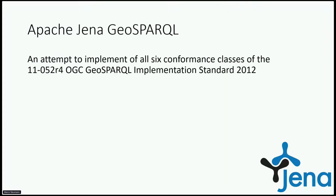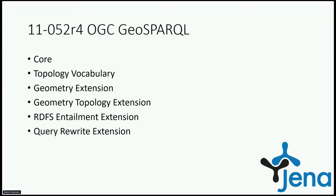Let's have a look at the Apache Jena GeoSPARQL module. As already mentioned, it is an attempt to implement all six conformance classes of the OGC GeoSPARQL implementation standard from 2012. The OGC GeoSPARQL standard establishes these six conformance classes that any GeoSPARQL implementation should strive to comply with to be standards-conformant. These conformance classes are: core, topology vocabulary extension, geometry extension, geometry topology extension, an RDFS entailment extension, and a query rewriting extension.